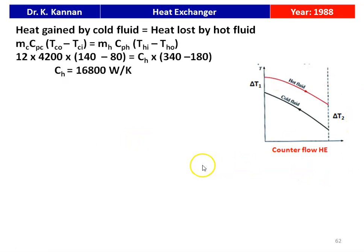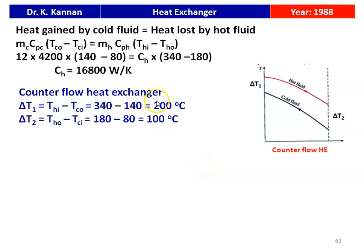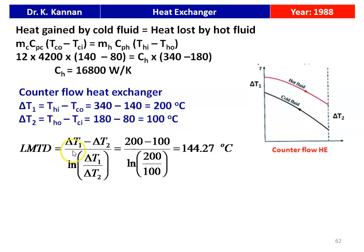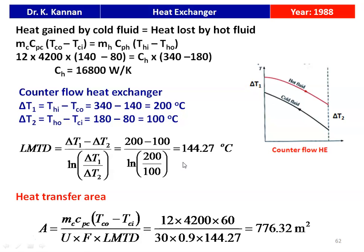For the counter flow heat exchanger temperature profile, ΔT1 = THI − TCO = 340 − 140 = 200°C. LMTD = (ΔT1 − ΔT2) / ln(ΔT1/ΔT2) = 144.27°C. Heat transfer area A = MC × CpC × (TCO − TCI) / (U × F × LMTD) = 12 × 4200 × 60 / (30 × 0.9 × 144.27) = 776.32 m².